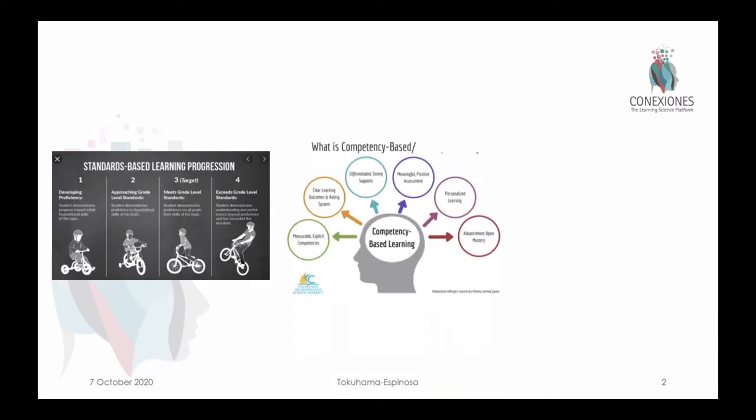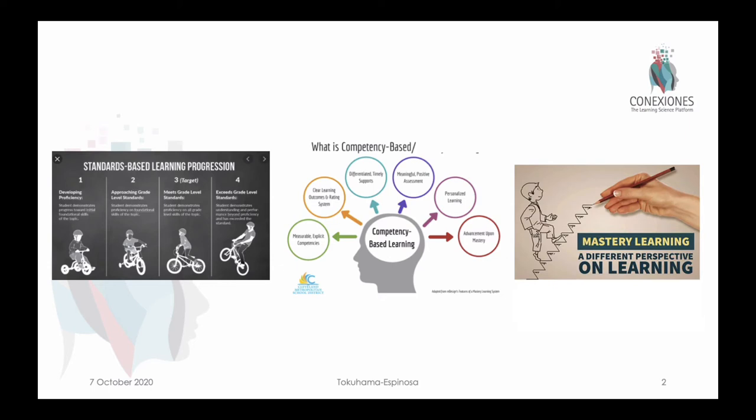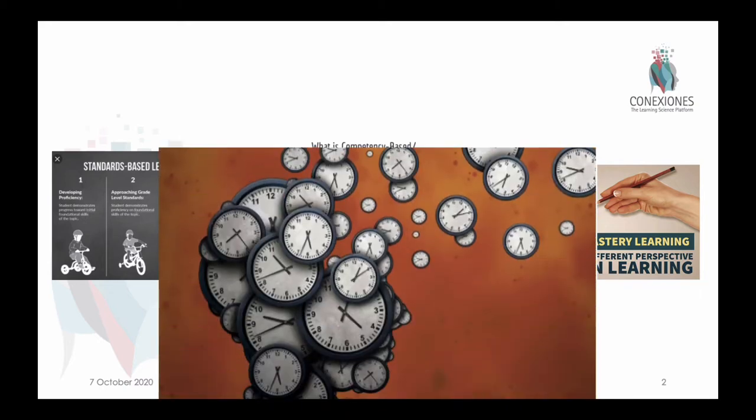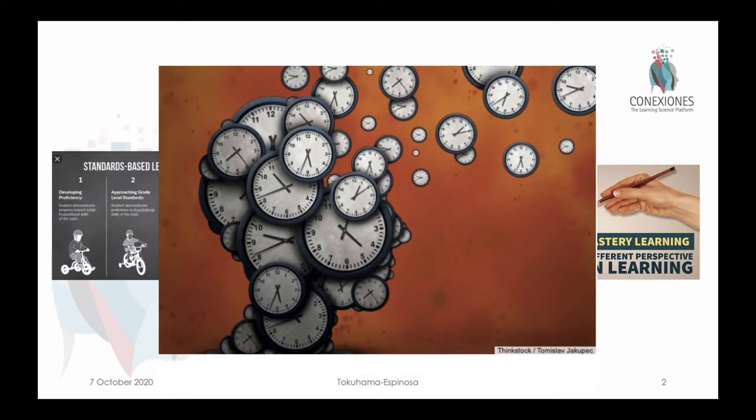Standards-based education came into play in the 80s, and competency-based came into play more or less at the very end of the 90s and the 2000s. Mastery learning is the oldest, returning from the 1968 version of Benjamin Bloom's concepts. The main factor differentiating each of these has to do with time.